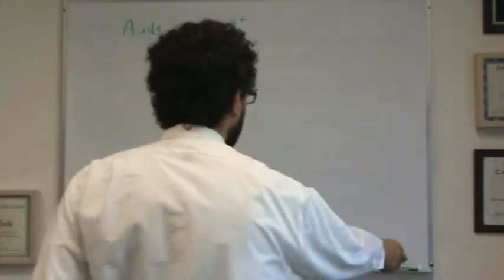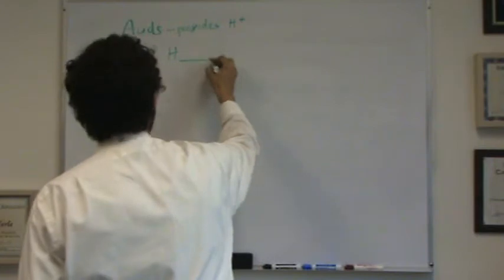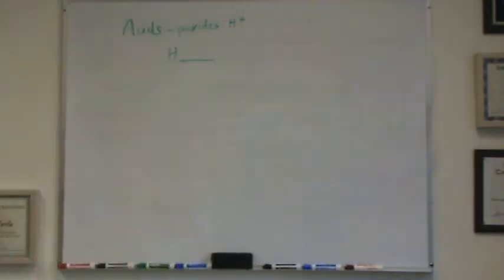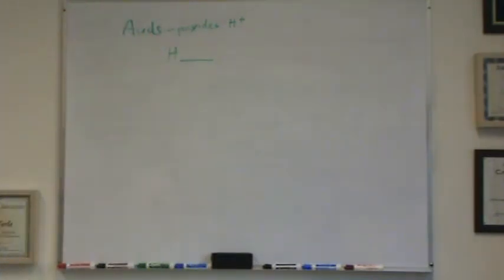It's usually written, as I have told you before, H blank, whatever that is after it. So you usually are going to recognize the acid because it has H in front. It doesn't have to be that way, but that's an easy way to remember. So like H2SO4, HCl, HBr, those are all acids.